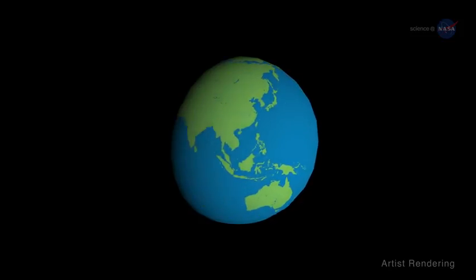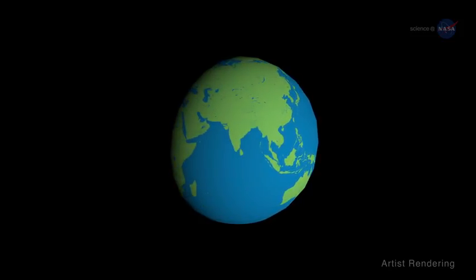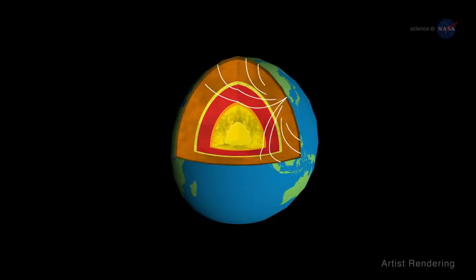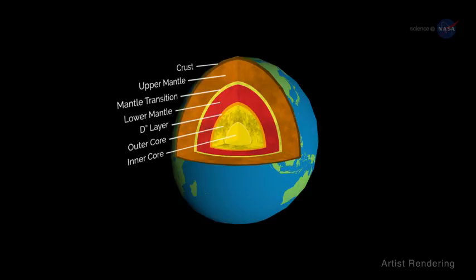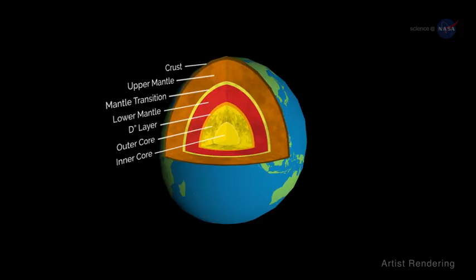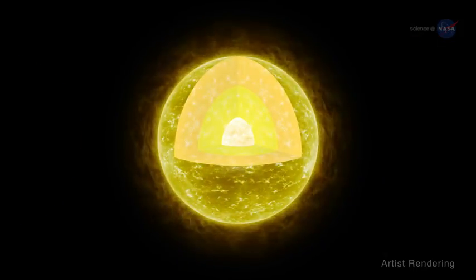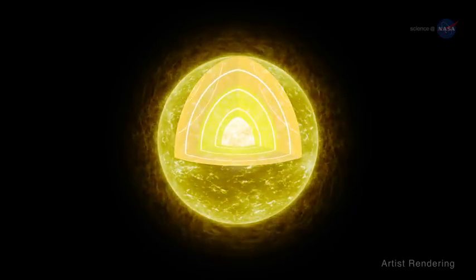Astro-seismology is akin to the science of seismology. Earthquakes send waves rippling through the body of Earth. By analyzing those waves, seismologists can figure out the interior structure of our planet. There are also waves rippling through the interior of stars—acoustic waves.